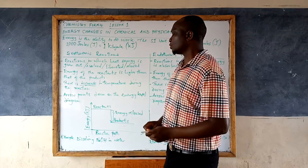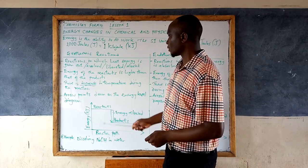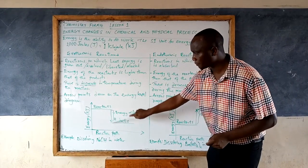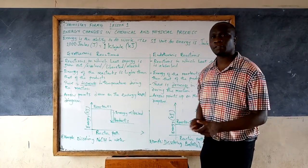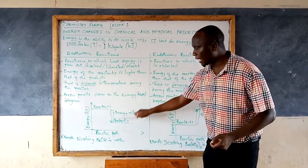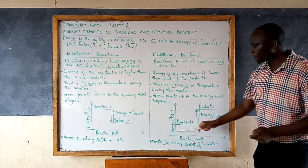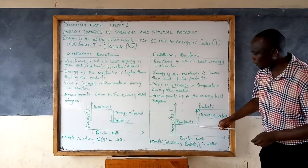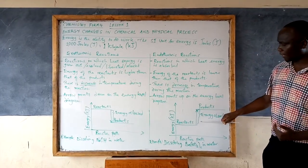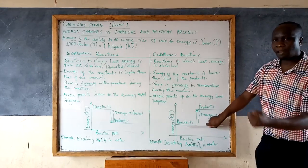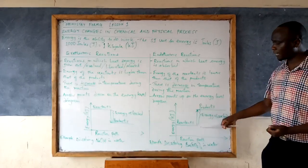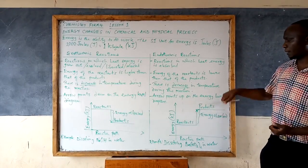On the energy level diagram, for the exothermic reaction, the arrow always points downward because of the decrease in energy from reactants to products — there is a drop in energy due to heat loss. While for the endothermic reaction, the arrow always points upward because there is an increase in amount of energy. The heat content that the reactants have plus that which was absorbed leads to an increase in heat energy, so the arrow points up.